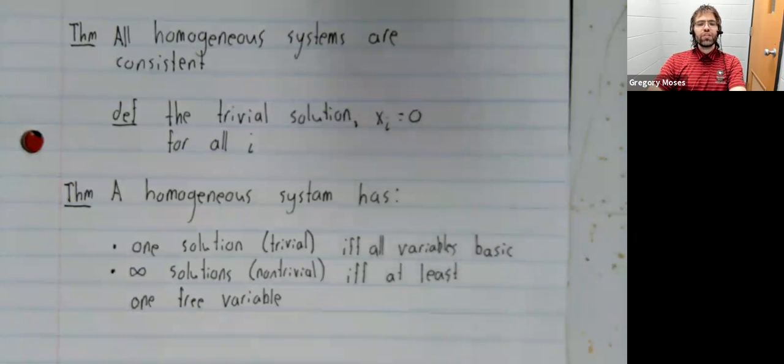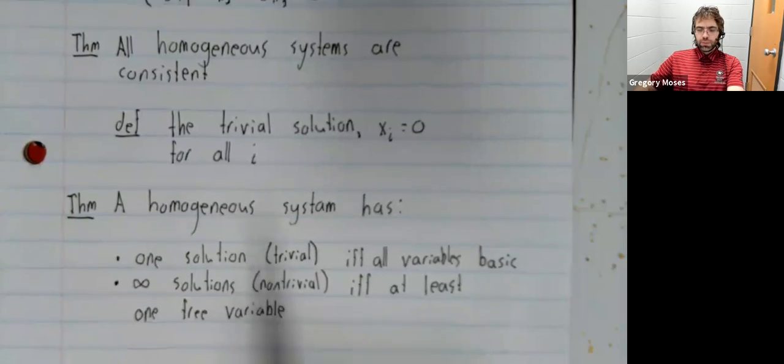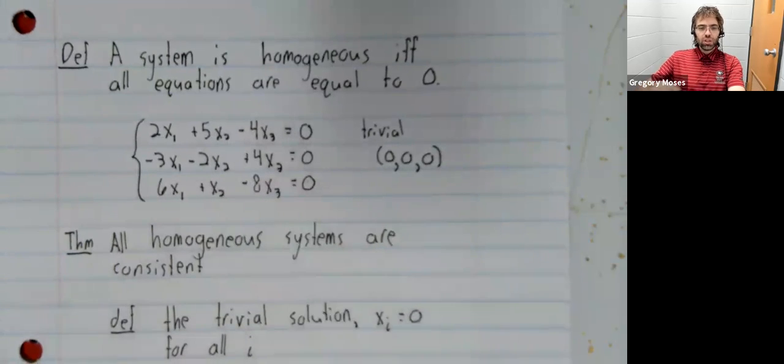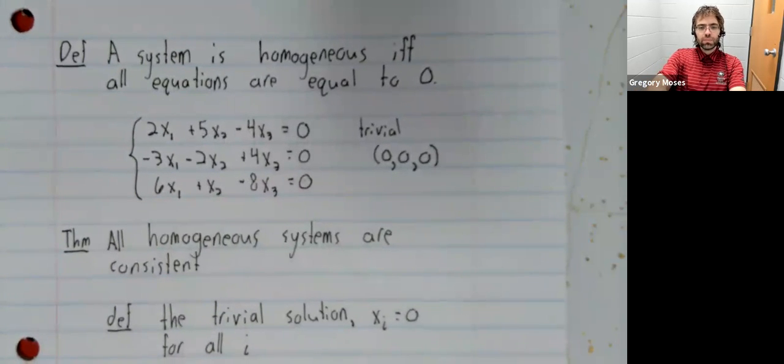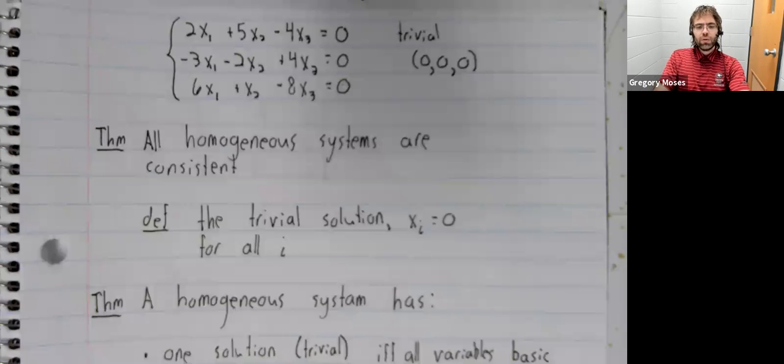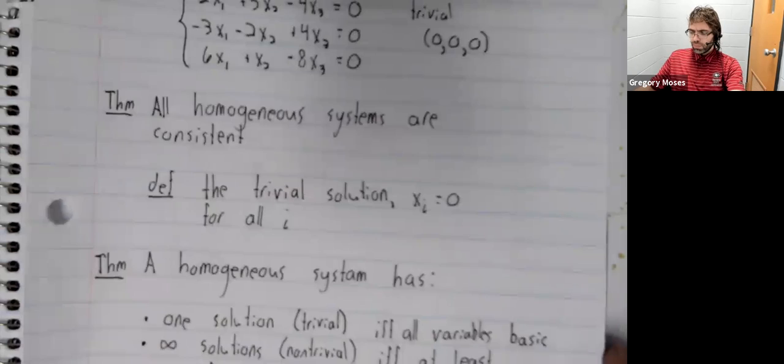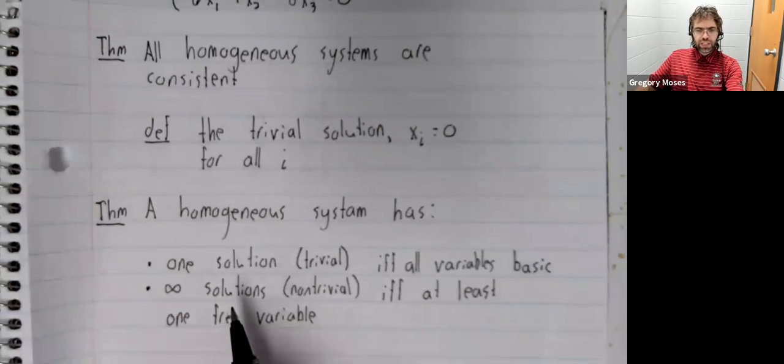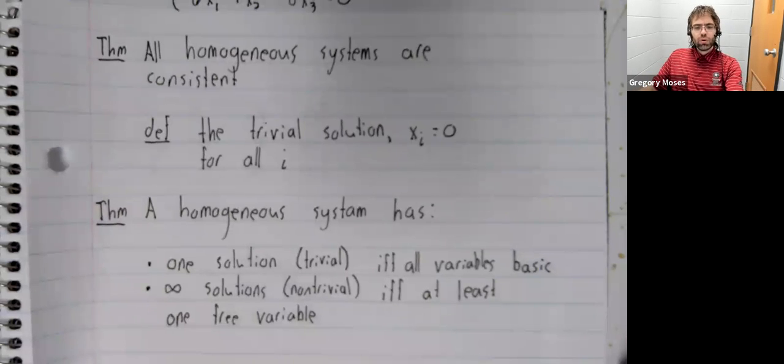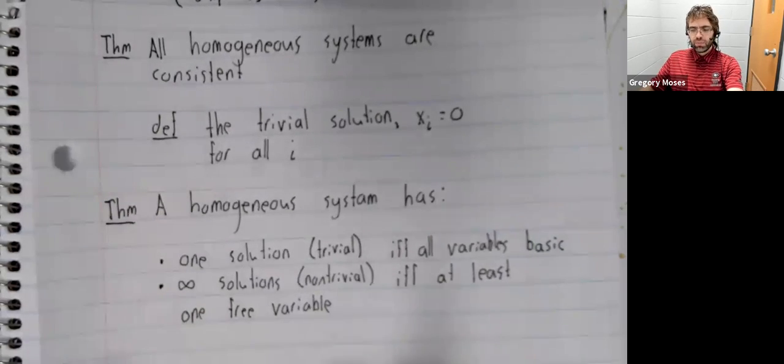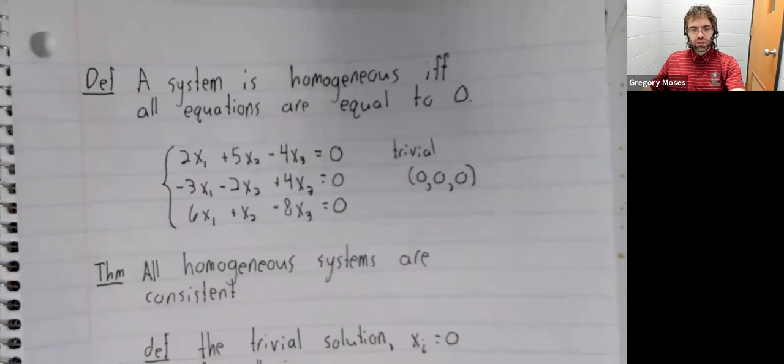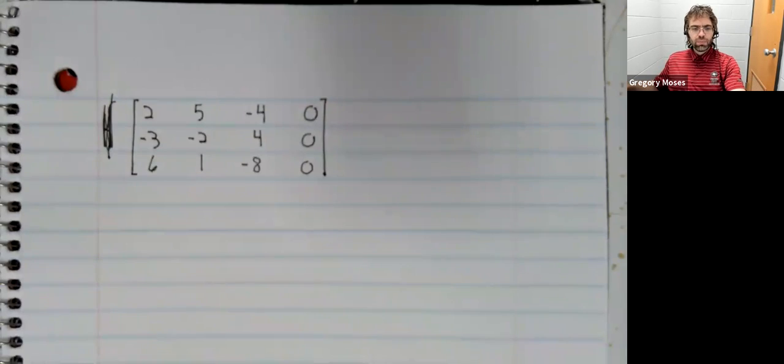and we have infinitely many solutions if we have any free variables. Let's apply this theorem to this system. To determine whether variables are basic or free, we have to perform Gaussian or Gauss-Jordan elimination on the system's augmented matrix.